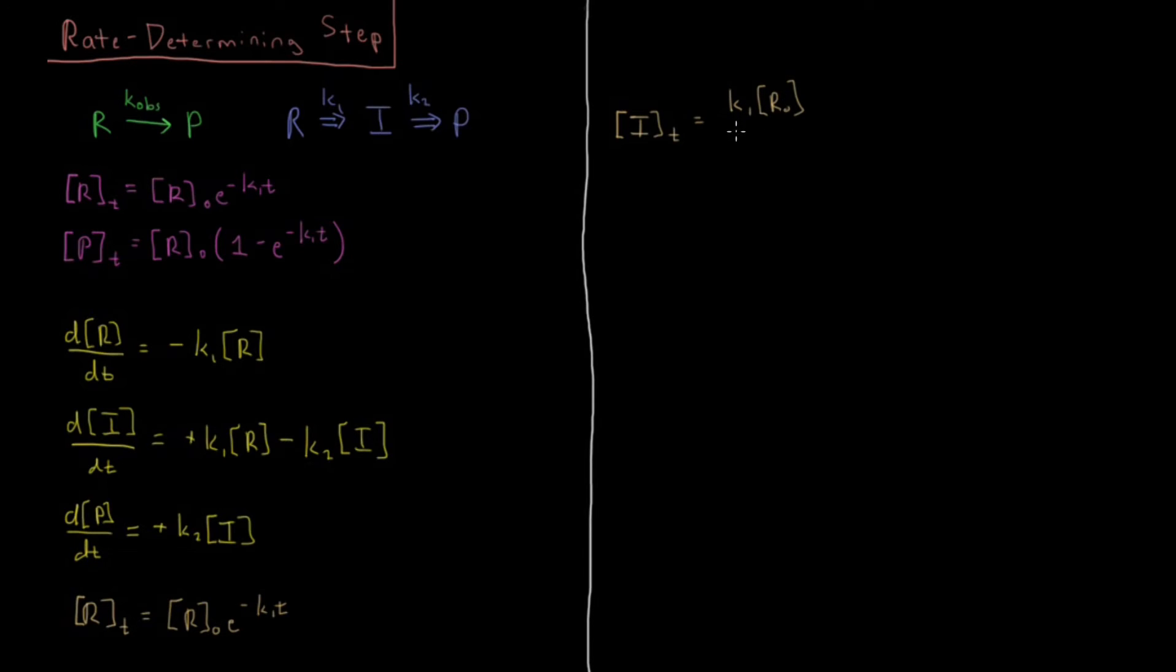So this concentration is, if you solve that whole case, it's going to be k1 times the initial concentration of the reactant divided by the difference of k2 and k1, k2 minus k1. All of that times the term e to the minus k1t minus e to the minus k2t. So that's our integrated rate law for our intermediate.